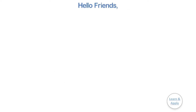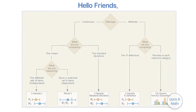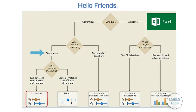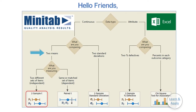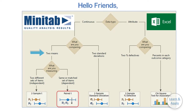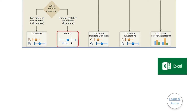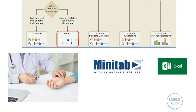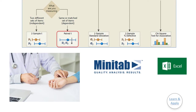Hello friends, in the last video we had seen the first hypothesis test to compare the mean of two samples, i.e. two sample t-test in Microsoft Excel as well as Minitab software with the help of a practical example. In this video, we are going to learn the second hypothesis test to compare the mean of two samples, i.e. paired t-test in Microsoft Excel as well as Minitab software with the help of a practical example for easy understanding and better clarity.